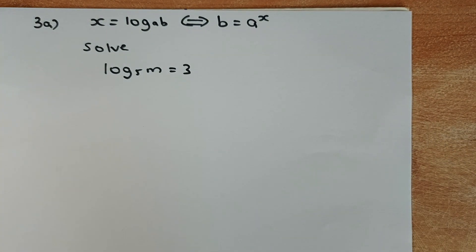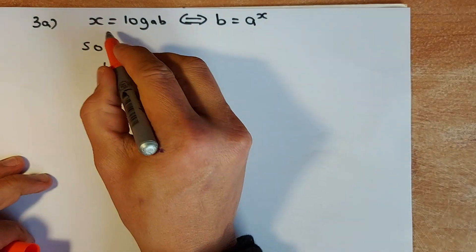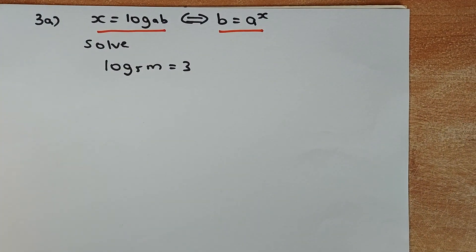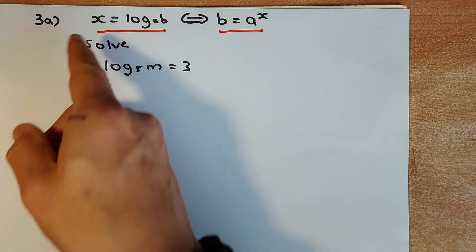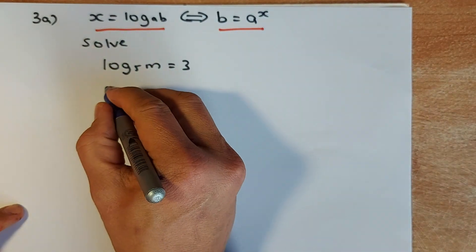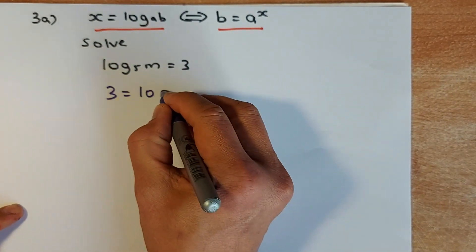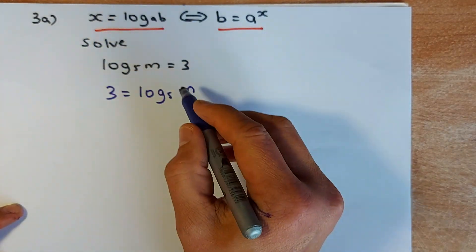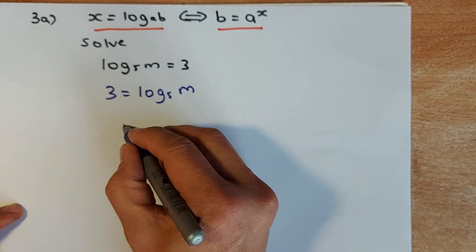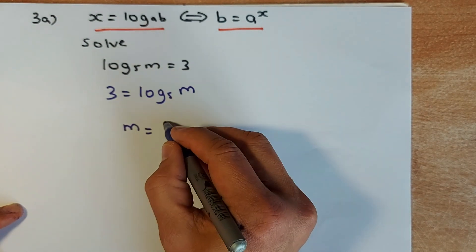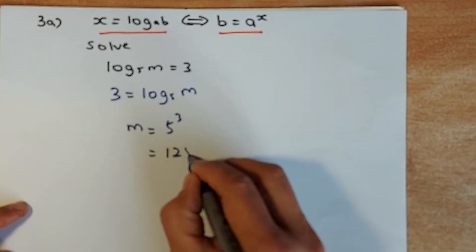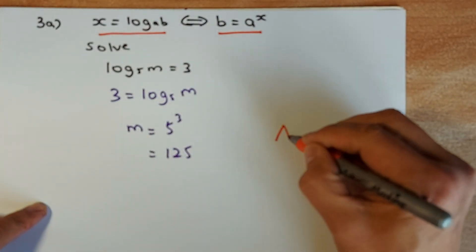Now we're going to look at question 3 — a log question. There's always a log question in NCEA Level 2, so you need to know this rule: log form and index form are interchangeable. So 3 equals log base 5 of m can be rewritten as m = 5 cubed. Put that in your calculator — it's 125 — and that will give you an easy achieve.